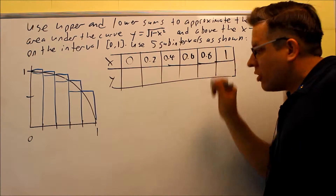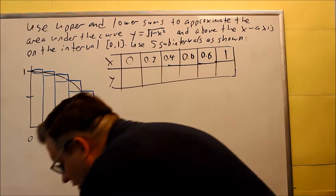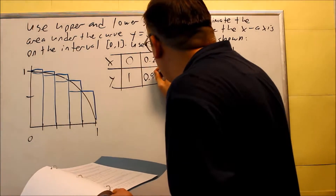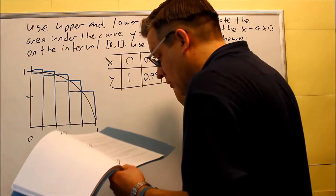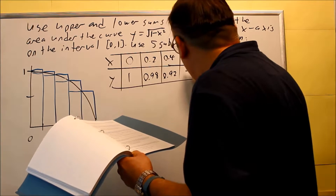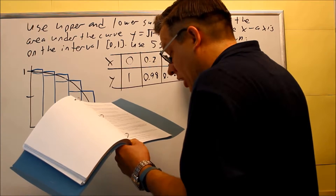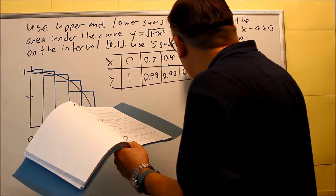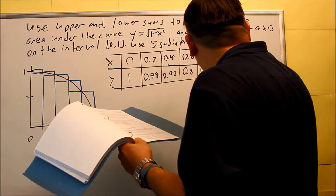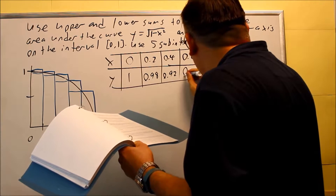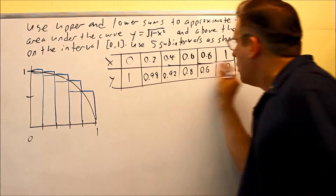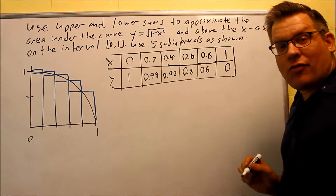I need to use my calculator and get all the y values. I have these written down, so I'm just going to put these in: 0.98, 0.92, 0.8, 0.6, and then 0. So these will be our values.